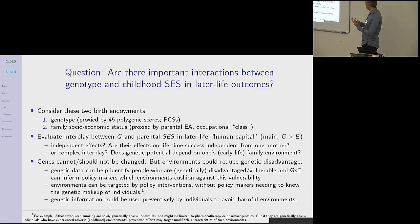So the question we're asking is, are there important interactions between genotypes and childhood socioeconomic status in later life outcomes? We use genotypes, basically polygenic scores, 45 different polygenic scores, and we use a consistent measure across these three data sets of family socioeconomic status. Then we evaluate the interplay between genes and parental socioeconomic status in later life human capital.